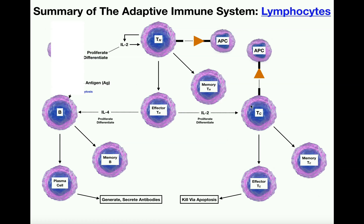First, let's focus on interleukin-2. We have some naive cytotoxic T cells — T sub C, meaning cytotoxic T cells or cytotoxic T lymphocytes — floating around. This cytotoxic T cell is naive, meaning it has not been exposed to the antigen yet. But assuming an antigen presenting cell has exposed the staph aureus antigen to the cytotoxic T cell, if this cytotoxic T cell receives interleukin-2 from the effector T cell, it will proliferate and differentiate.